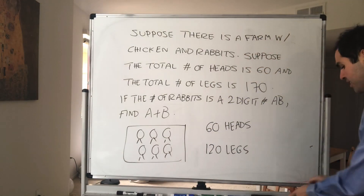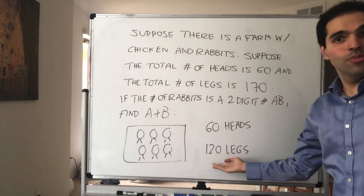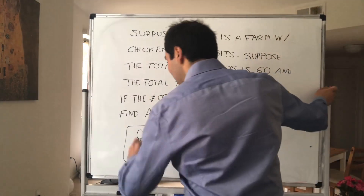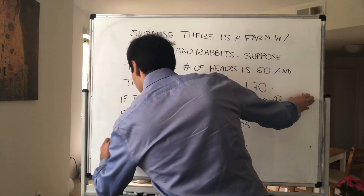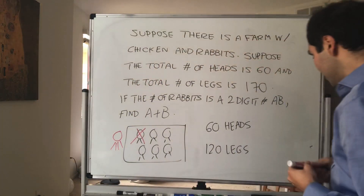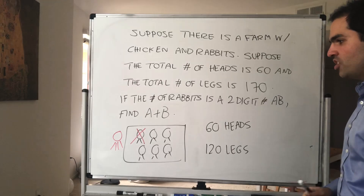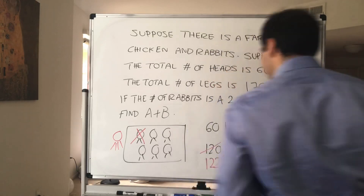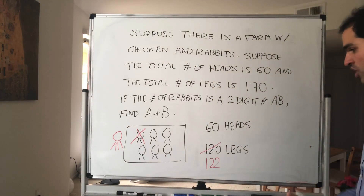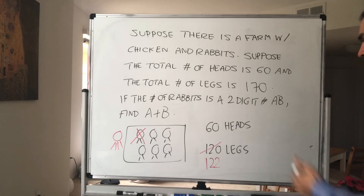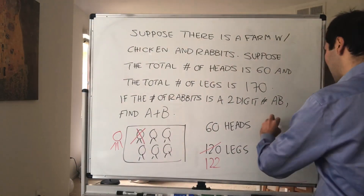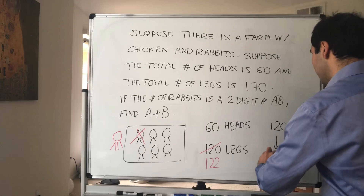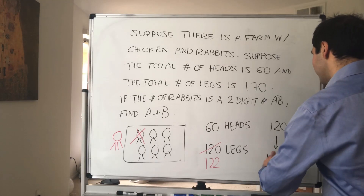Now, 120 is not 170, so we definitely need some rabbits. What happens if you replace one chicken with a rabbit? Well, the number of heads doesn't change, but you're adding two legs — so now there are 122 legs. The question is, how many replacements would you have to do? How many chickens would you have to swap for rabbits in order to get 170 legs?